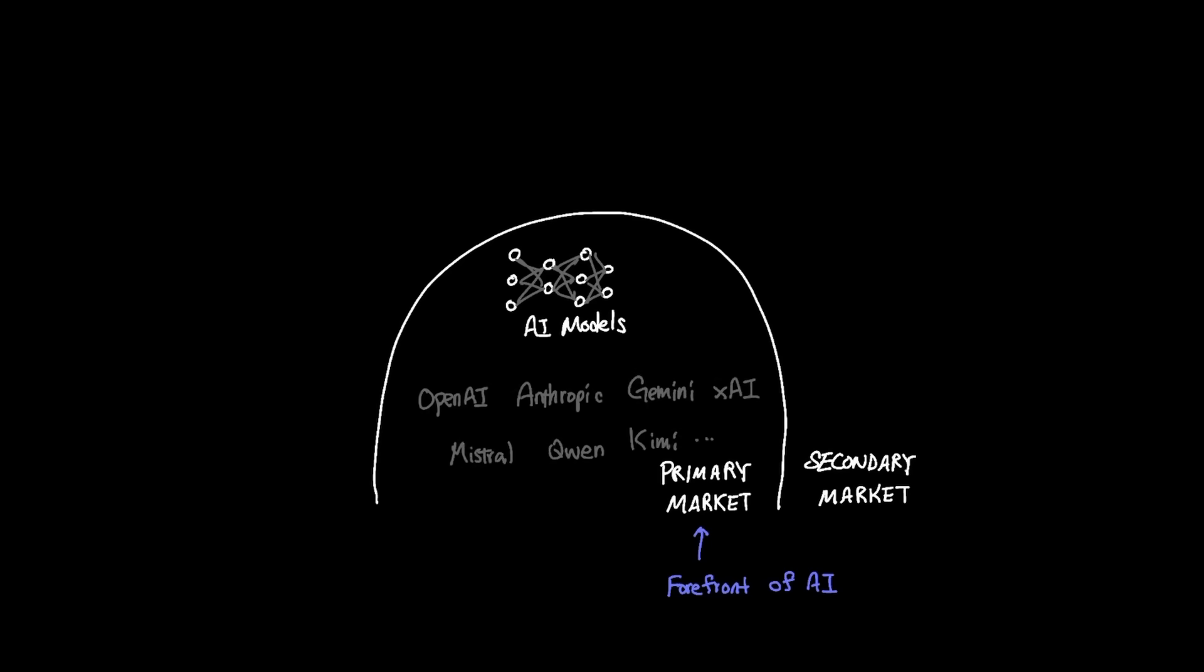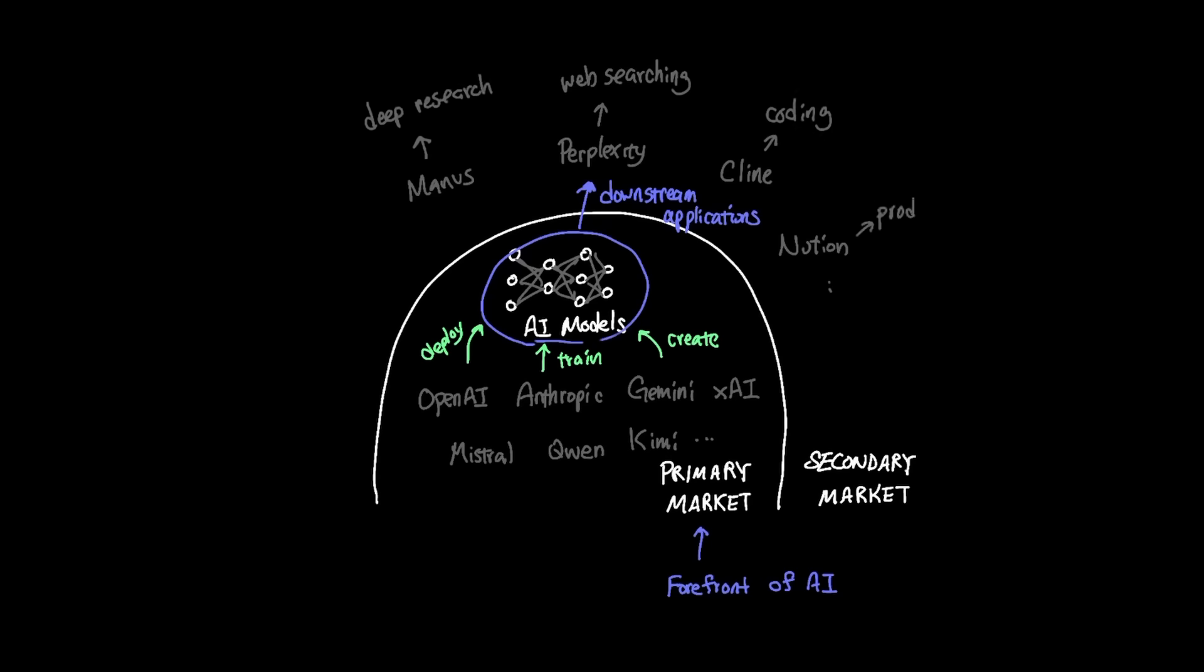These are all examples of companies in the primary market that create, train, and deploy state-of-the-art AI models. The secondary market takes these AI models and leverages them to create downstream applications like Perplexity, Kline, Manus, Notion, where you essentially apply the models into domains like web searching, coding, deep research, productivity, and more.